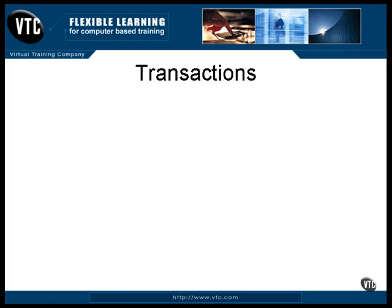Let me show you a very simple example. Take a table that contains a list of names. Each name has an amount of money and a number of gold bars, and the people listed in the table buy and sell gold bars among themselves. The table and its contents, with just two entries, looks like this.